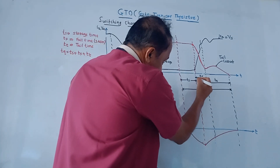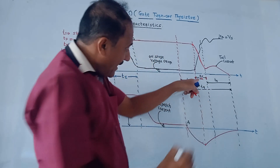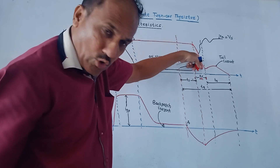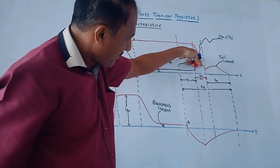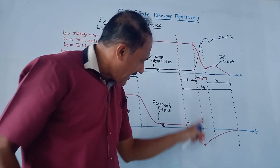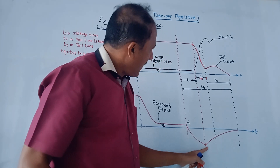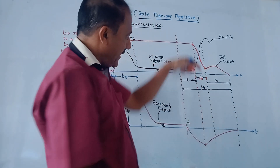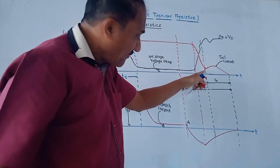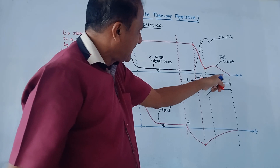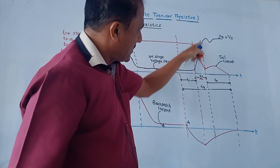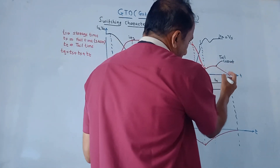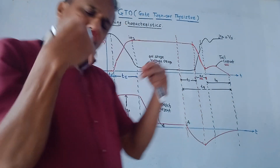Fall time tf indicates the falling of anode current with a certain slope. This tf starts at the maximum value of negative gate current and continues up to a certain point where there is an abrupt change in the slope of the anode current graph. This abrupt slope change also causes a corresponding abrupt change in the anode voltage. This time period is called tf — fall time.